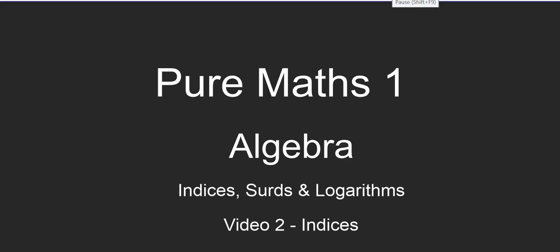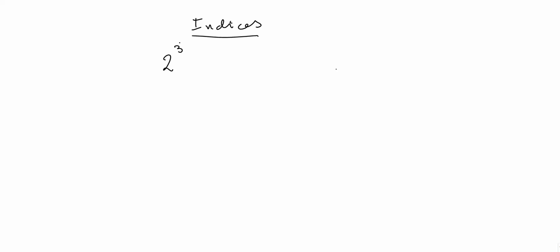This is the second video in the Pure Math 1 Algebra topic on indices and logarithms. We should be dealing with indices and looking at the arithmetic and algebra involving indices. Now we know that if I write 2 cubed, that means 2 times 2 times 2, which is of course 8.